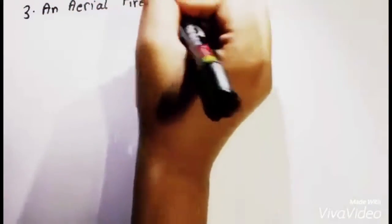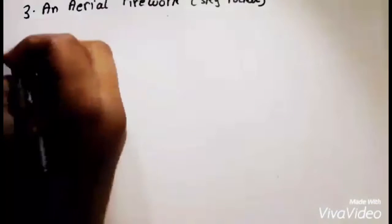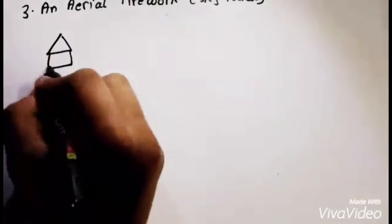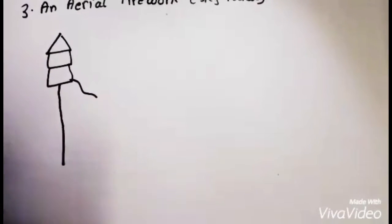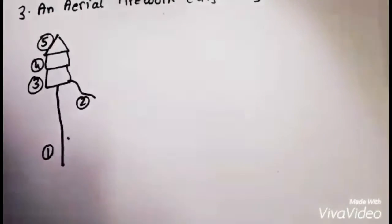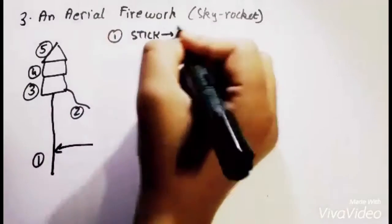How does an aerial firework or a skyrocket work? A skyrocket has five parts. While the fifth part is just to give an aerodynamic shape to the rocket, there are four main parts.